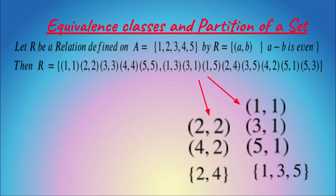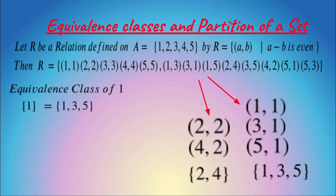Similarly, we can take the elements related to 3: {1, 3, 5} — it is similar to elements related to 1. The elements related to 4 are {2, 4}, similar to elements related to 2. The set of elements related to 1 — that set is called the equivalence class of 1.